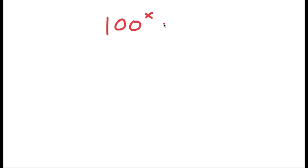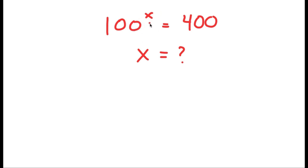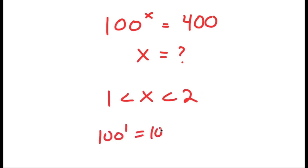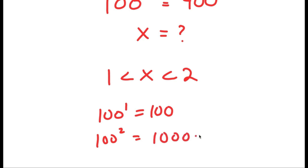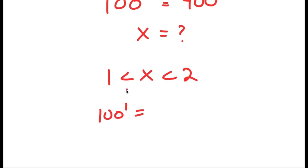In this video, I'm going to solve an interesting exponential equation. My equation is 100 to the power of x is equal to 400, and I want to find the value of x. We can see that x is going to be in between 1 and 2, because 100 to the power of 1 is 100 and 100 to the power of 2 is 10,000. So it's going to be closer to 1 than to 2, but somewhere in the range of 1 and 2.